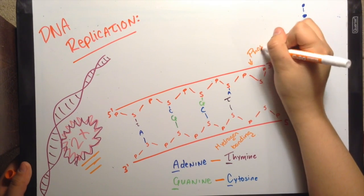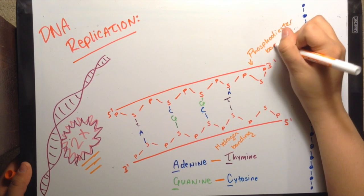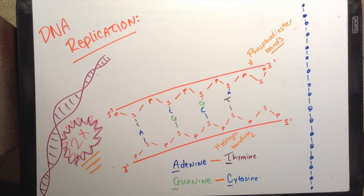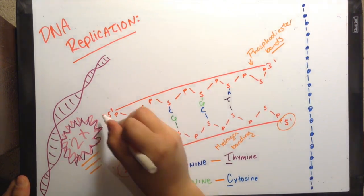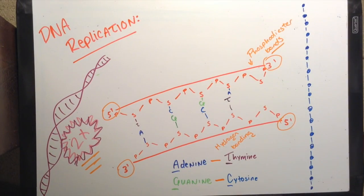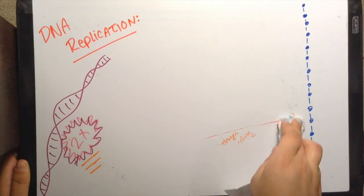The backbone of DNA is made of phosphodiester bonds, and each strand is identified based on the hydroxyl group of the sugar, either 5 prime to 3 prime or 3 prime to 5 prime direction. DNA replication is semi-conservative.